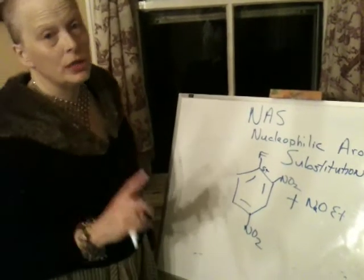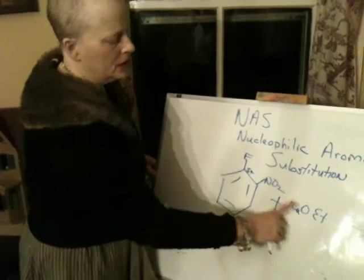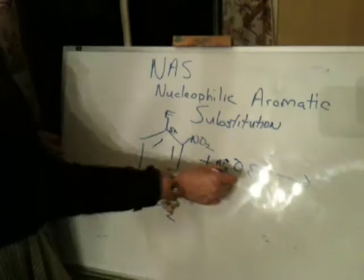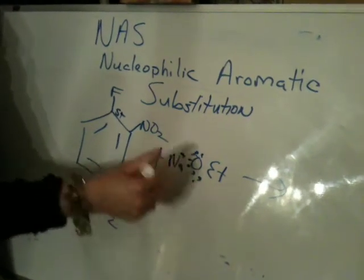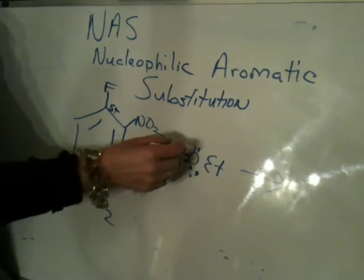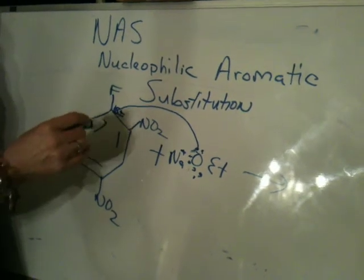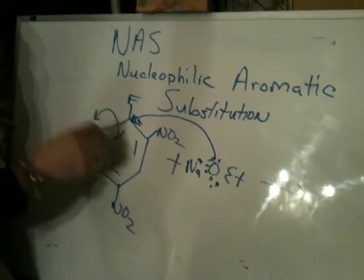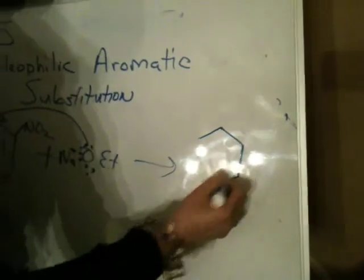So how does this mechanism work? It's a two-step process. The most important thing is that this carbon be very delta plus. This nucleophile is a very strong base — concentrated charge on oxygen. It will go in and hit this carbon, but it doesn't directly substitute. Instead, the pi system gets involved, and we form what is called a Meisenheimer complex.